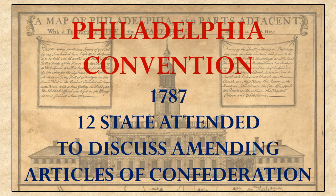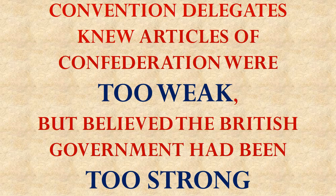The Constitution was a result of the Philadelphia Convention of 1787. At that convention, 12 states attended to discuss amending the Articles of Confederation, as was discussed in the previous lesson. The delegates attended on the premise that the Articles of Confederation were far too weak to deal with the problems that the states needed to collectively address.